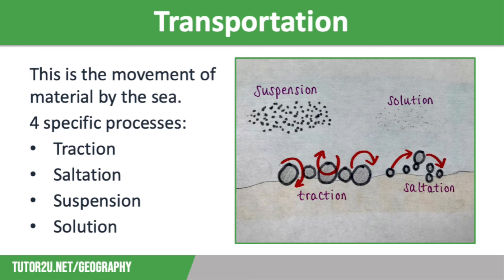Let's move on to transportation. This is the movement of material by the sea. The material carried by the sea is called load, and is usually material that has been eroded and picked up by the waves. Load varies from large rocks to fine silt, but there are four specific processes of transportation that you need to know.